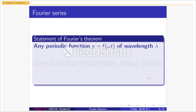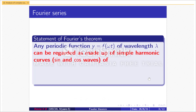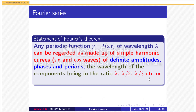Statement of Fourier's theorem: Fourier's theorem can be stated as follows. Any periodic function y = f(ωt) of wavelength λ can be regarded as made up of simple harmonic curves of definite amplitudes, phases, and periods. The wavelengths of the components being in the ratio λ : λ/2 : λ/3, etc., or the frequencies in the ratio n : 2n : 3n, etc.